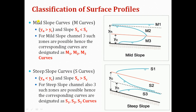Coming to classification of surface profiles in detail. Mild slope curves are called M curves — these are the surface profiles occurring in mild slope channels where the normal depth is greater than critical depth and S0 is less than SC. For mild slope channels, three zones are possible and hence three curves exist. If the depth of flow is greater than both the normal depth and critical depth, we get M1 curve, occurring in zone 1.